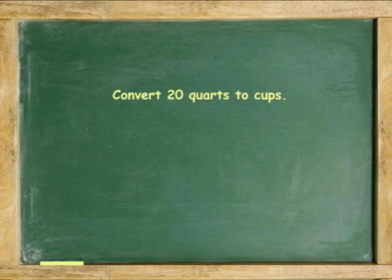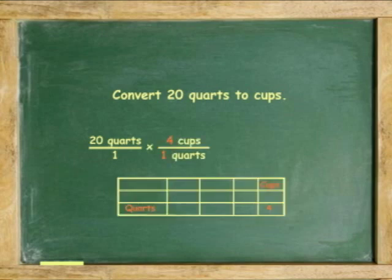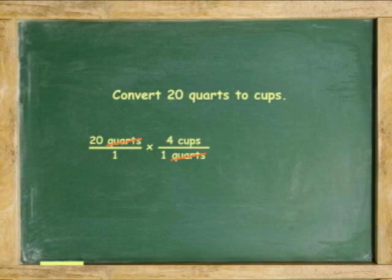Another example. Convert 20 quarts to cups. 20 quarts over 1 times 4 cups in 1 quart. Cancel the quarts. 20 times 4 is 80. 80 cups is the answer.